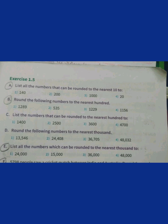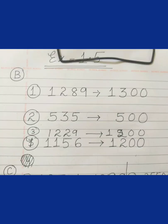Coming to question number B: round the following numbers to the nearest 100. We have to find a range with a difference of 100. The number 1289 — what can it be rounded up to? The range is 1200 to 1300. So, 1289 is nearer to 1300, and 1289 can be rounded up to 1300. Similarly, 535 has a range of 500 and 600, so it can be rounded up to 500. Similarly, question numbers 3 and 4.